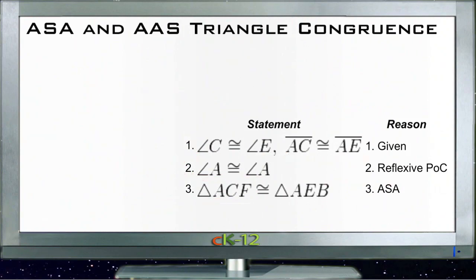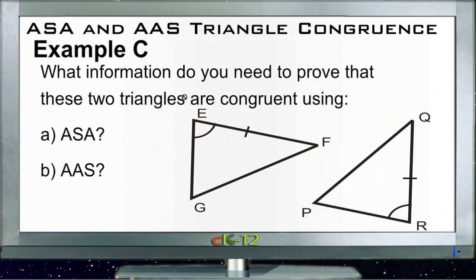Okay, let's take a look at example C. Example C asks what information we need in order to prove that the two triangles are congruent, using first, angle side angle. So let's take a look at that.